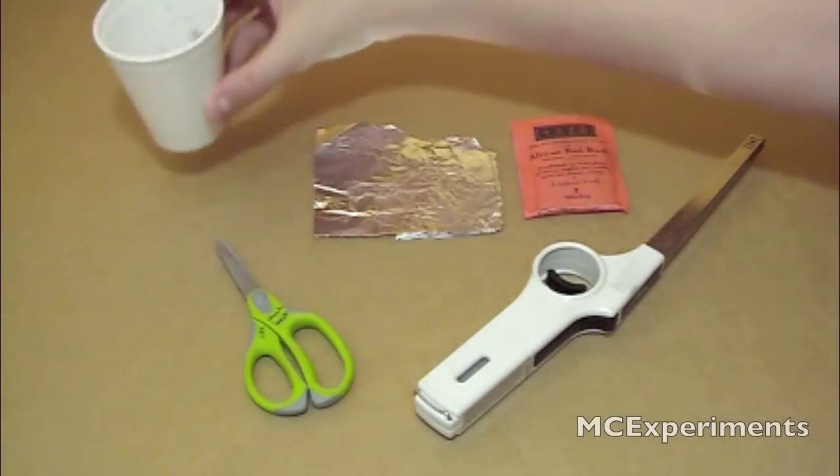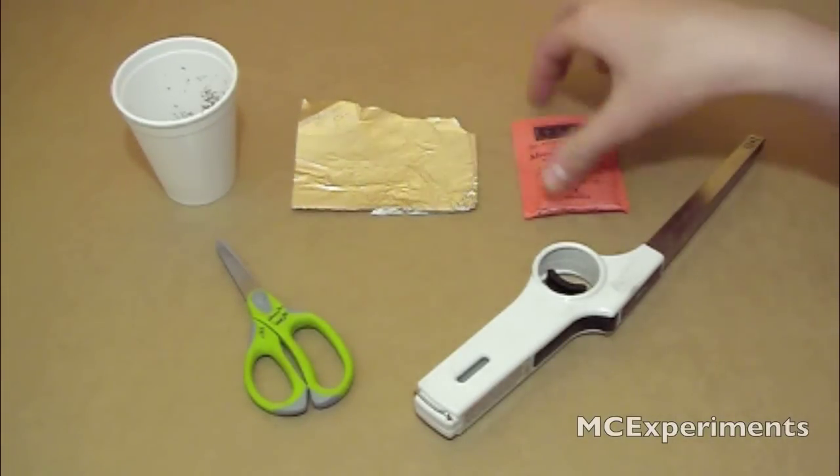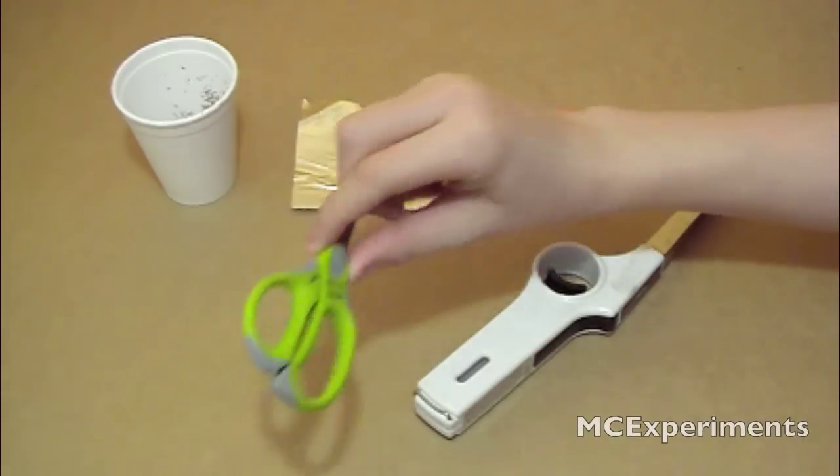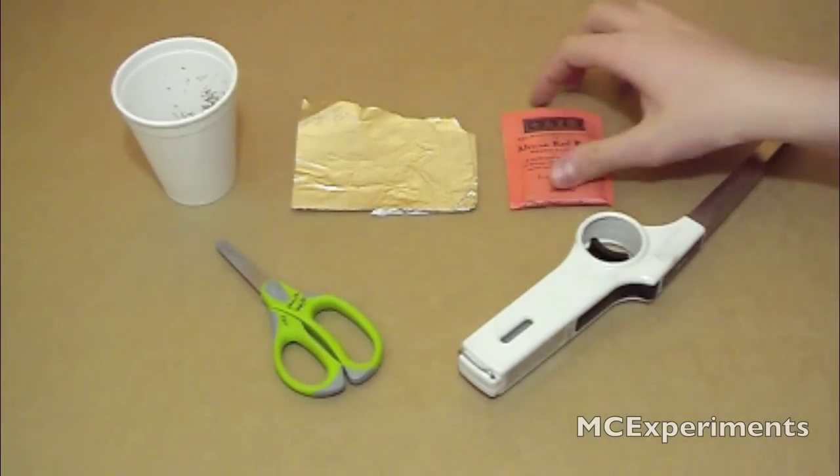For this experiment, you'll need a cup, foil that you can fold into a square or rectangle, a teabag, a pair of scissors, and a regular lighter or any kind of lighter.